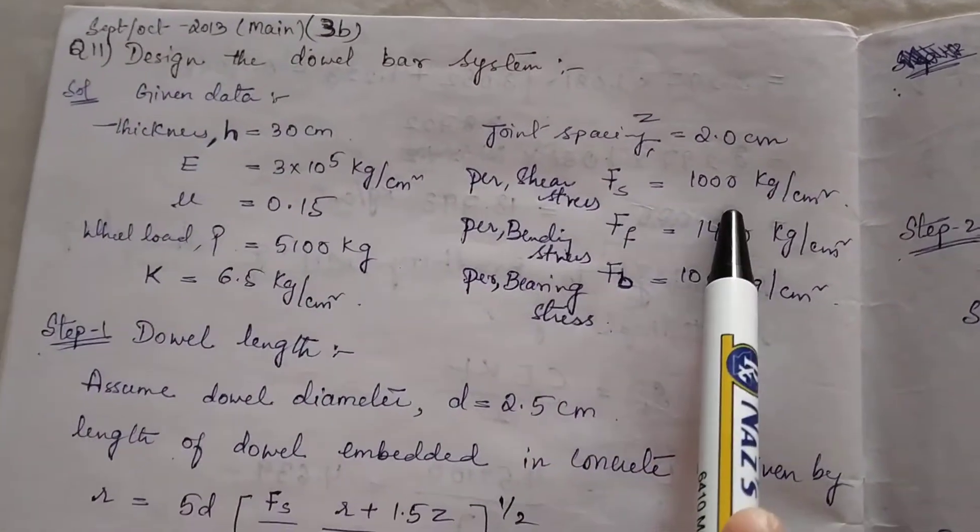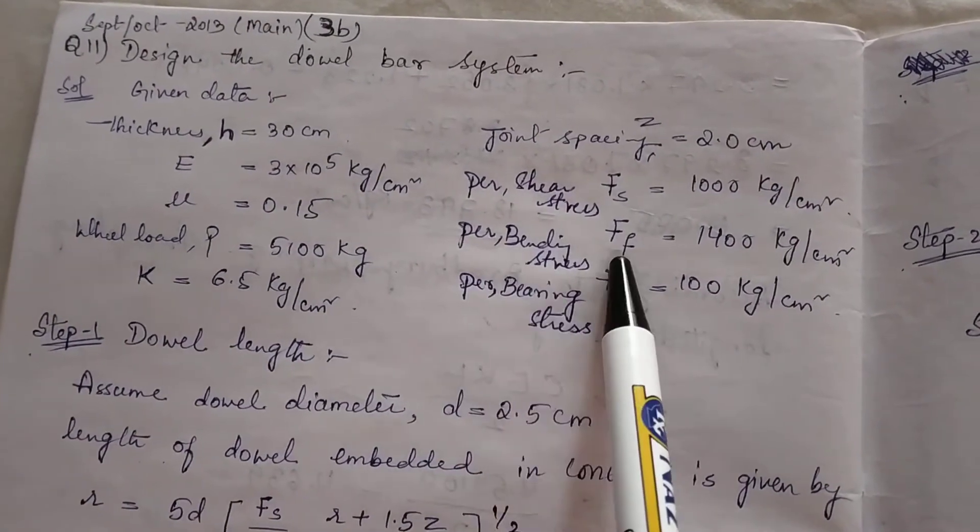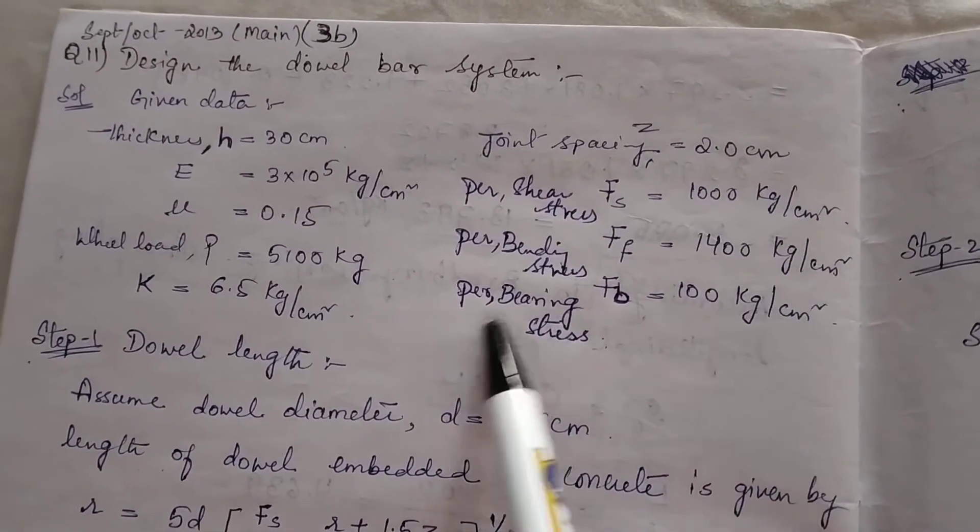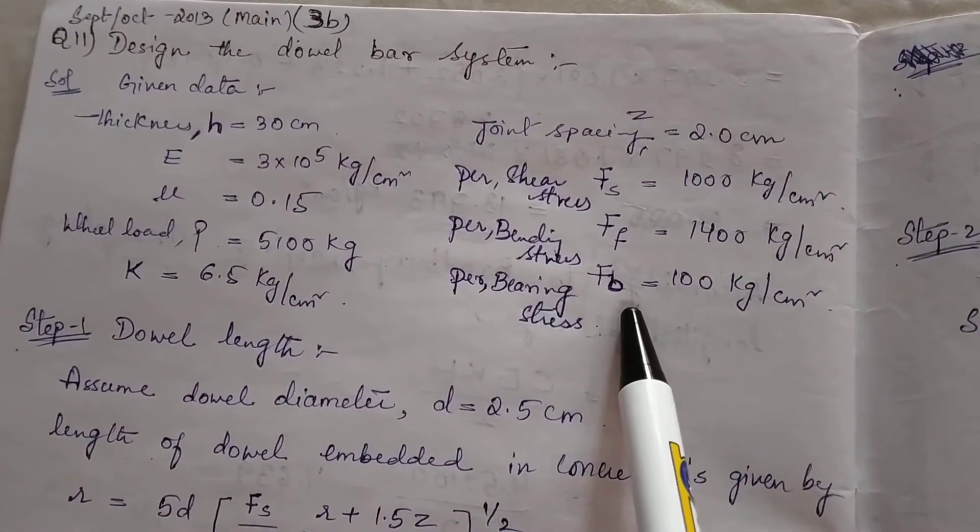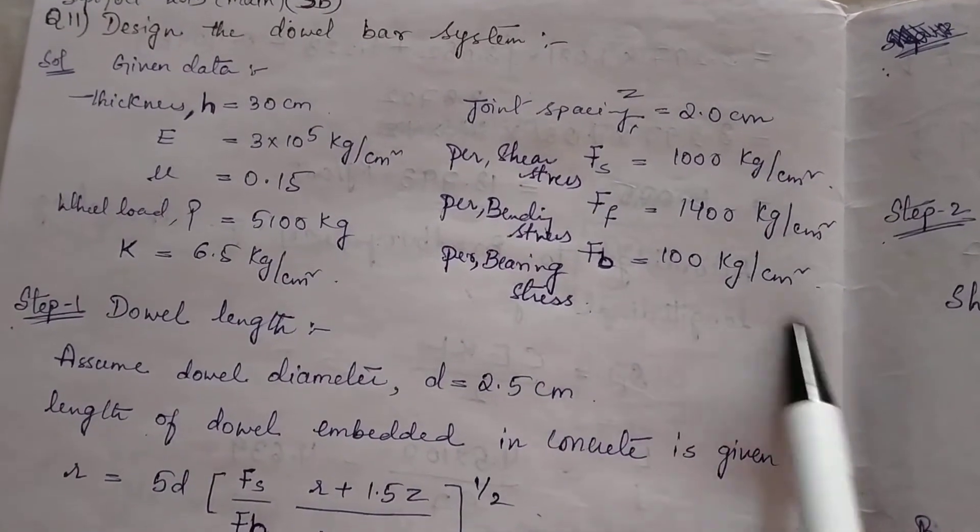Next, permissible shear stress Fs is given as 1000 kg/cm², permissible bending Fb = 1400 kg/cm², permissible bearing stress Fb = 100 kg/cm².